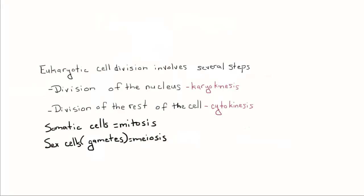Eukaryotic cell division is going to involve a couple of steps. You've got the division of the nucleus, which is called karyokinesis, and then you have the division of the rest of the cell, the cytoplasm and all the organelles, which is called cytokinesis.